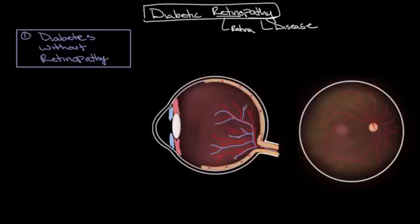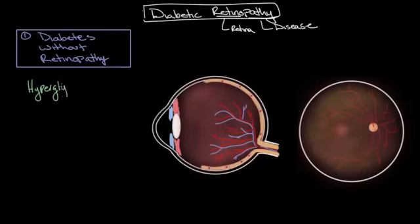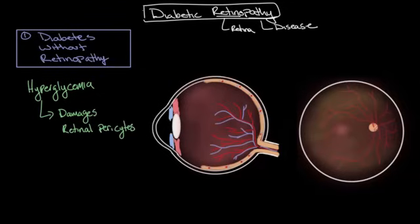The first stage is diabetes without retinopathy. Why do we consider this a stage of diabetic retinopathy? Because the stages are dictated by underlying pathology. So long before someone with diabetes develops vision changes, the underlying hyperglycemia or high blood sugar levels causes damage to cells known as pericytes within the retina. These retinal pericytes are specialized contractile cells that surround the retinal vasculature, and they're very important for helping regulate blood flow throughout the retina. The damage to these pericytes is believed to be caused by an inability to properly metabolize glucose within these cells, resulting in osmotic damage.